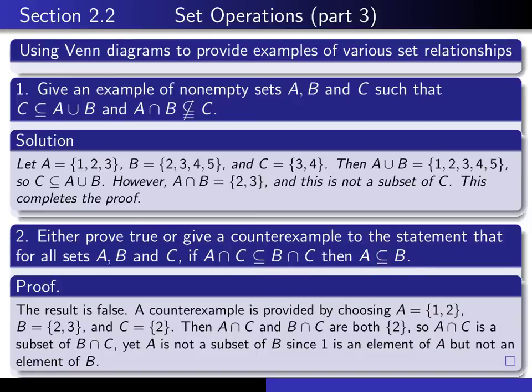Okay, so A intersect C and B intersect C are both this set, what we would call singleton 2. So A intersect C is a subset of B intersect C, since we have the stronger condition that they're actually equal. But A is not a subset of B, and why is A not a subset of B? Well, because 1 is an element of A, but it's not an element of B. So that completes the proof.